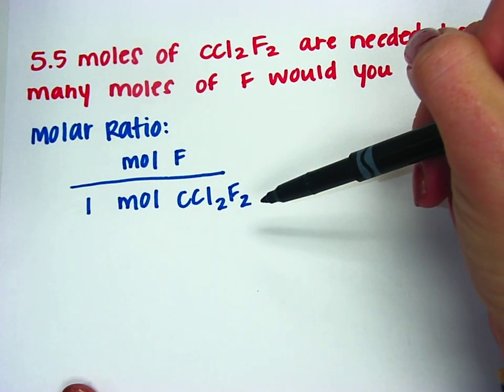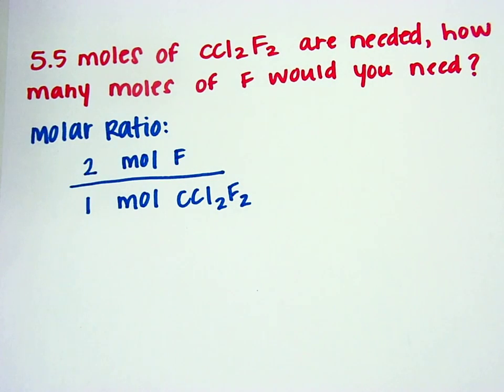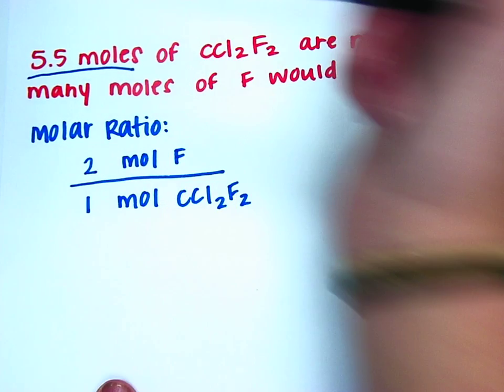Since there's a little two right here, we have two moles of fluorine in one mole of CCl2F2. But that's not what this problem is asking. This problem is asking about 5.5 moles.